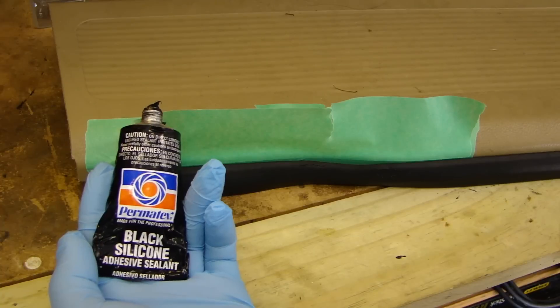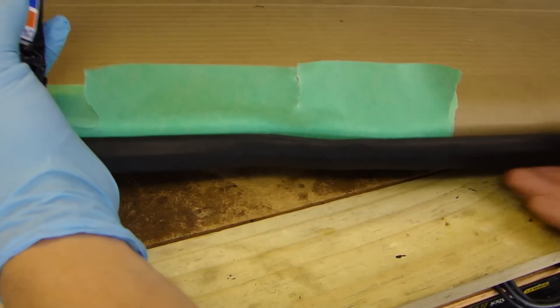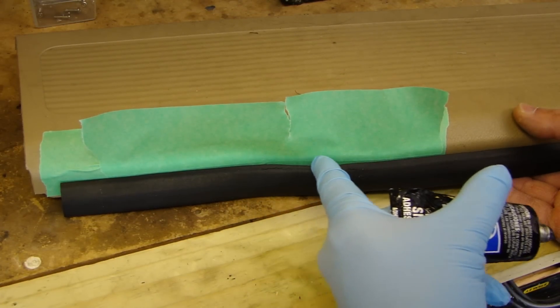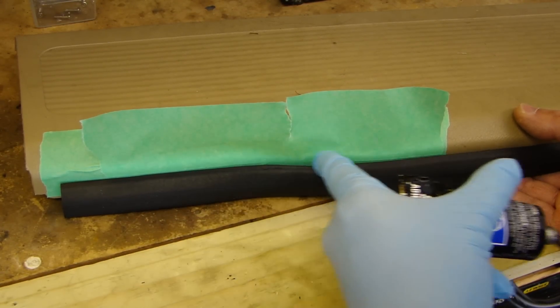So here I have the black silicone, and what you want to do is any area where there's a void, go ahead and fill it in with the silicone.